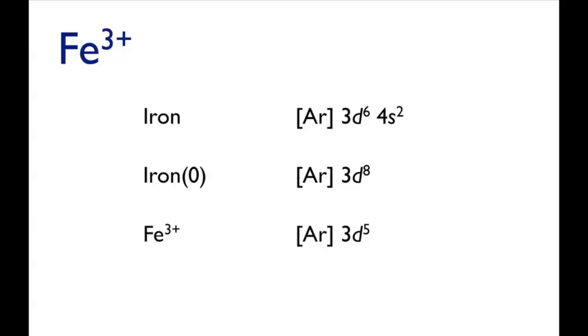In Fe³⁺ there are three fewer electrons, so the electronic configuration for Fe³⁺ is [Ar] 3d⁵.